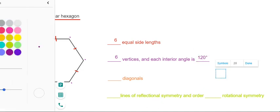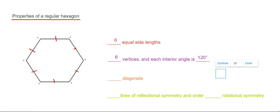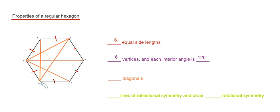Let's do the number of diagonals next. The diagonals go from one corner to another corner. So we have one, two, three, four, five, six, seven, eight, nine.